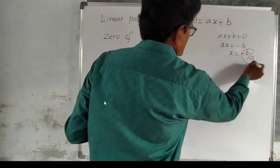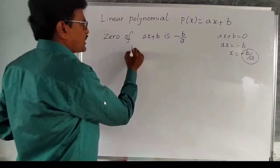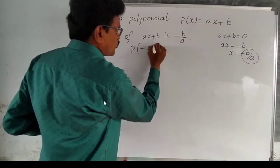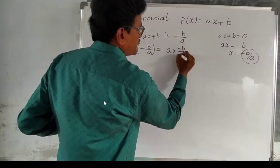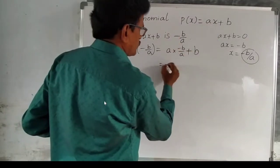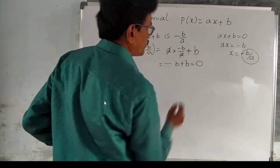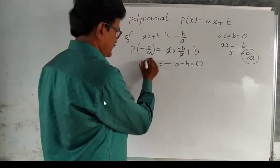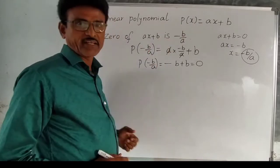So x = minus b by a is the zero of this polynomial. It means p(minus b by a) = a into (minus b by a) plus b. The a's cancel, giving minus b plus b, which equals zero. So p(x) = 0 at x = minus b by a, and that is said to be the zero of the polynomial.